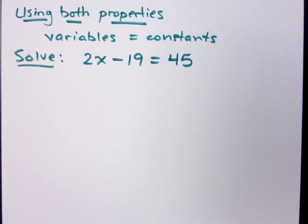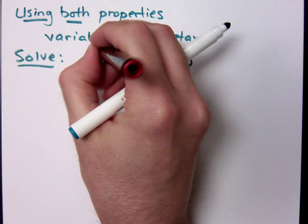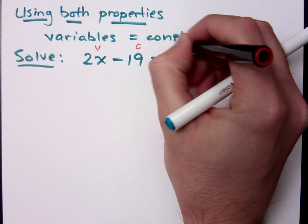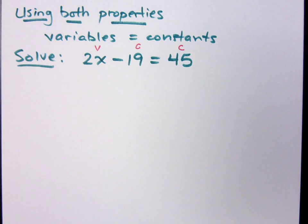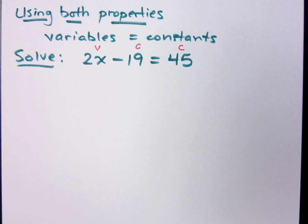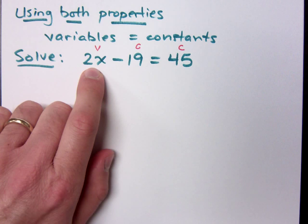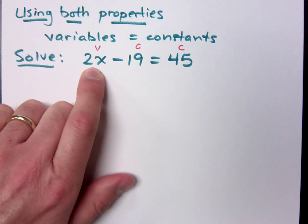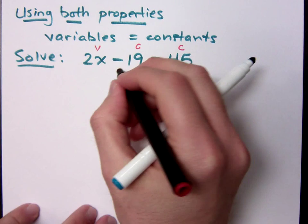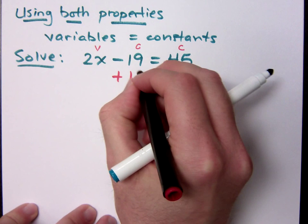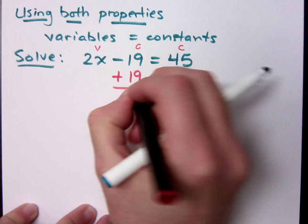So when I look at this problem, I see that I have a variable term, a constant term, and another constant term. How do I go about getting these guys separated? What do you think you would do? Add 19 to the other side — move the 19 to the other side. This is your only variable term, so this is the guy I need to get by himself. Adding 19 is a proper use of the addition property.